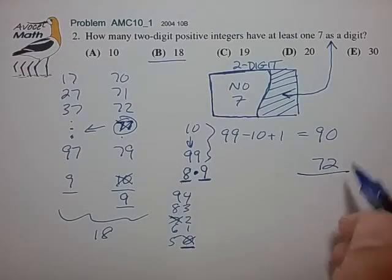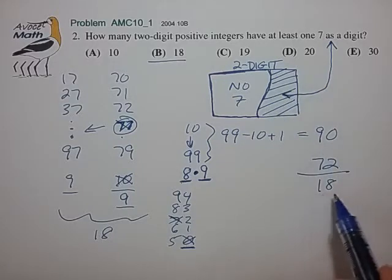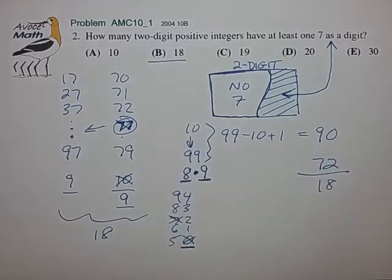And subtracting these two numbers, we get the total number that we're trying to seek, the shaded region set for a total of 18, which again corresponds to choice B.